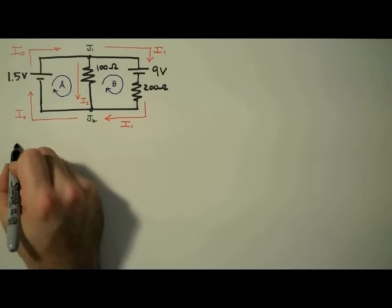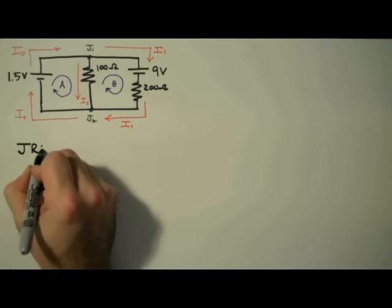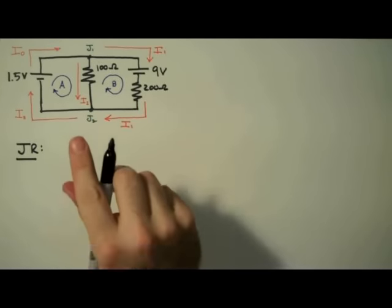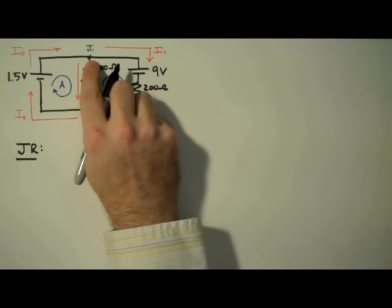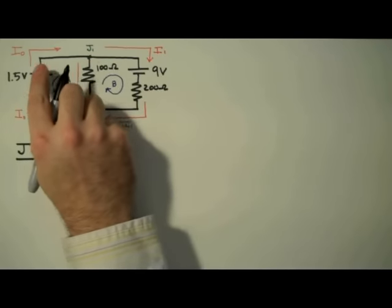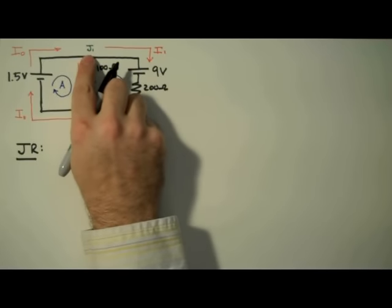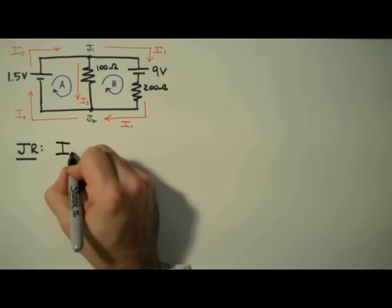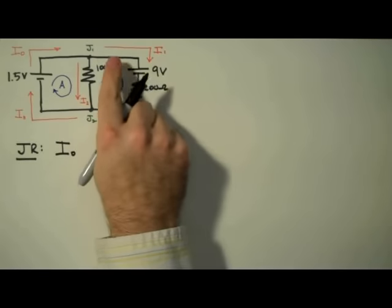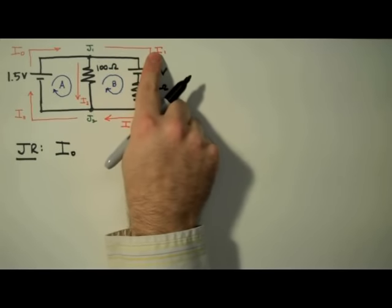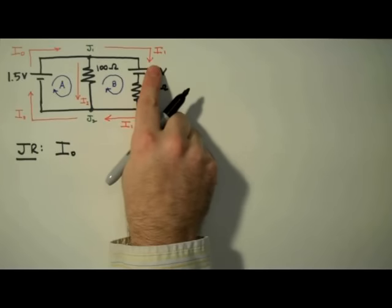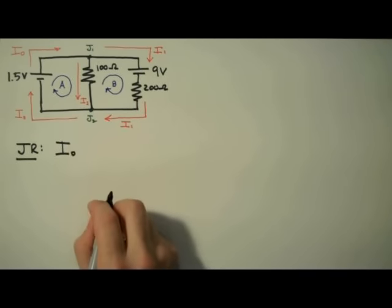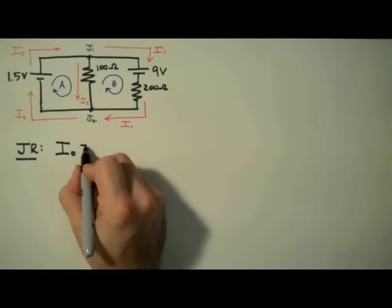Now that we've labeled our circuit, we're going to apply the junction rule, which states that the sum of the currents into a junction is equal to the sum of the currents out of a junction. So we're going to apply this to junction 1. The current in is just I0, so on the left-hand side of the equation I'm going to write I0. And the currents coming out of that junction, we have I1 and I2, so on the right side we'll have I1 plus I2.